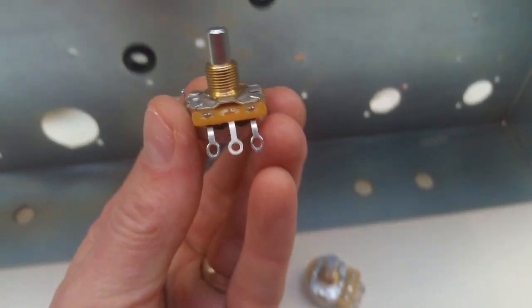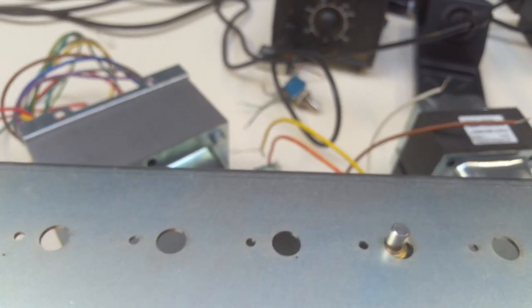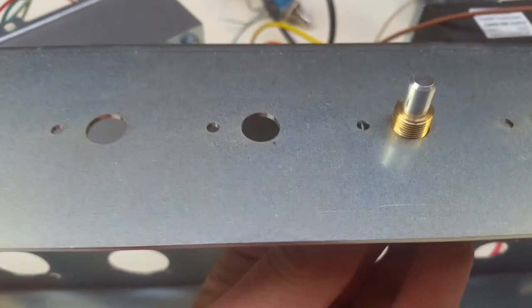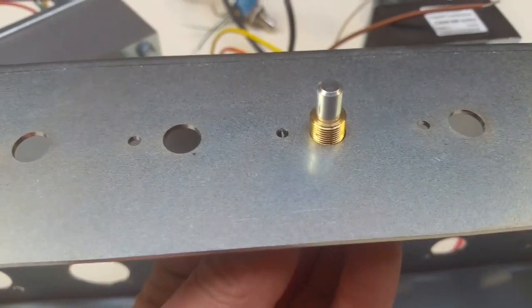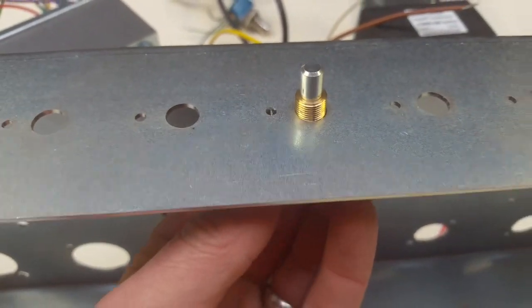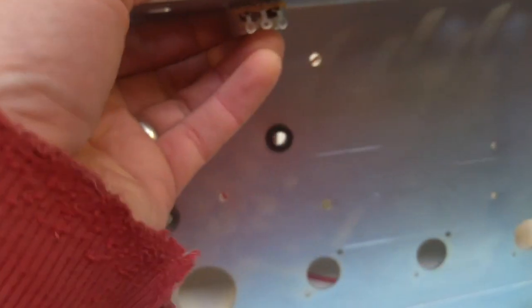There's the tabs up. It'll fit into the hole and locate in there as well, and that'll never turn once the nut's on there. So that's really the best way of locking the pot in the chassis.